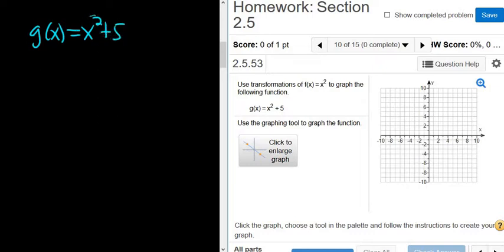So whenever you add a number to the actual y value of the function, you go up 5. So this is the graph of x squared shifted up 5.